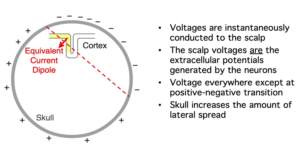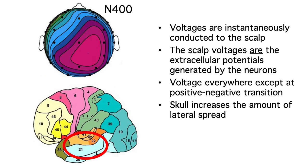Finally, the voltage fields from a given brain area spread out broadly as they're conducted through the brain, and the high resistance of the skull causes them to spread even more widely. In many cases, the electrode with the largest voltage is quite far away from the generator. For example, the N400 appears to be generated way down in the temporal lobes, but we see it on the scalp at the central and parietal electrodes.